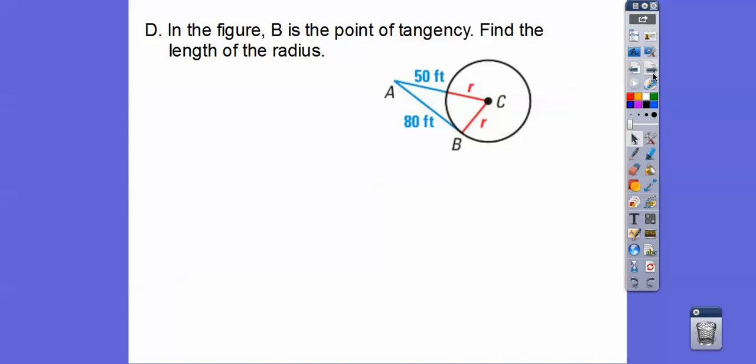All right, in this figure, B is the point of tangency. Find the length of the radius. So if that's the point of tangency, remember, right angle right there. So you make the right triangle, the radius is probably going to be one of the legs. Missing length by the Pythagorean theorem.